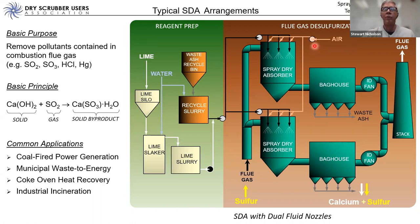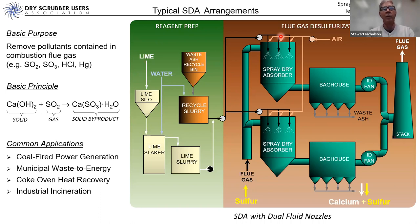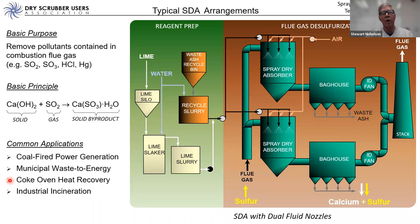Dual fluid nozzle systems are not as common in the coal-fired power industry, though some large-scale examples exist — for example, the Baldwin facility in Illinois with two 650 MW units, and Basin Electric's Laramie River plant. Nearly all municipal waste-to-energy systems use dual fluid nozzle technology, while most coke oven heat recovery SDAs use rotary atomizers. For industrial incineration, dual fluid nozzle is common on the smaller scale units.